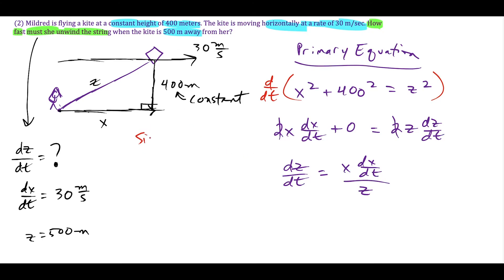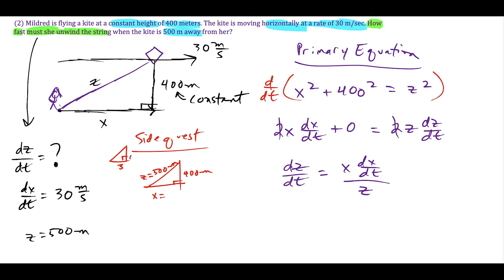To solve for dz/dt we need X, dx/dt, and Z. We know dx/dt and Z, so the side quest is to find X when Z equals 500 meters. With a height of 400 meters and hypotenuse of 500 meters, we recognize this as a 3-4-5 triangle multiplied by 100: 5 times 100 is 500, 4 times 100 is 400, so X equals 300 meters.